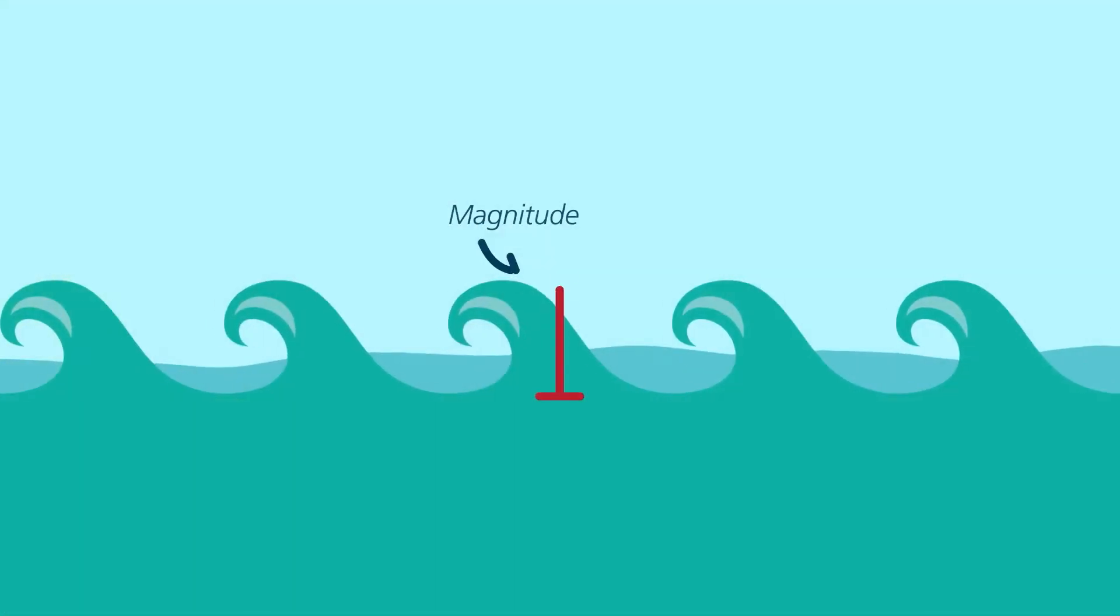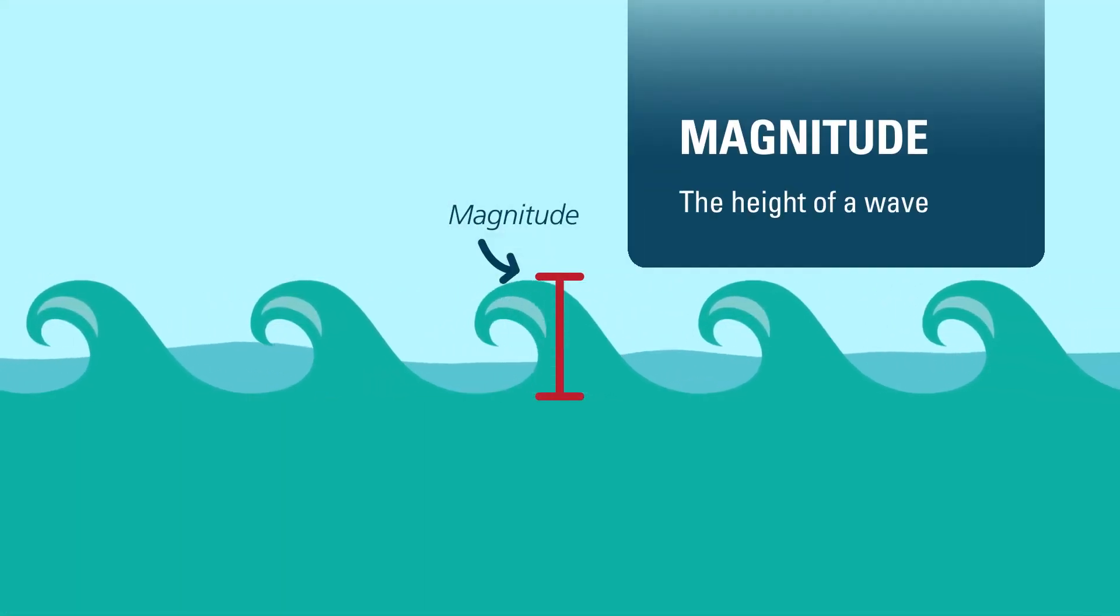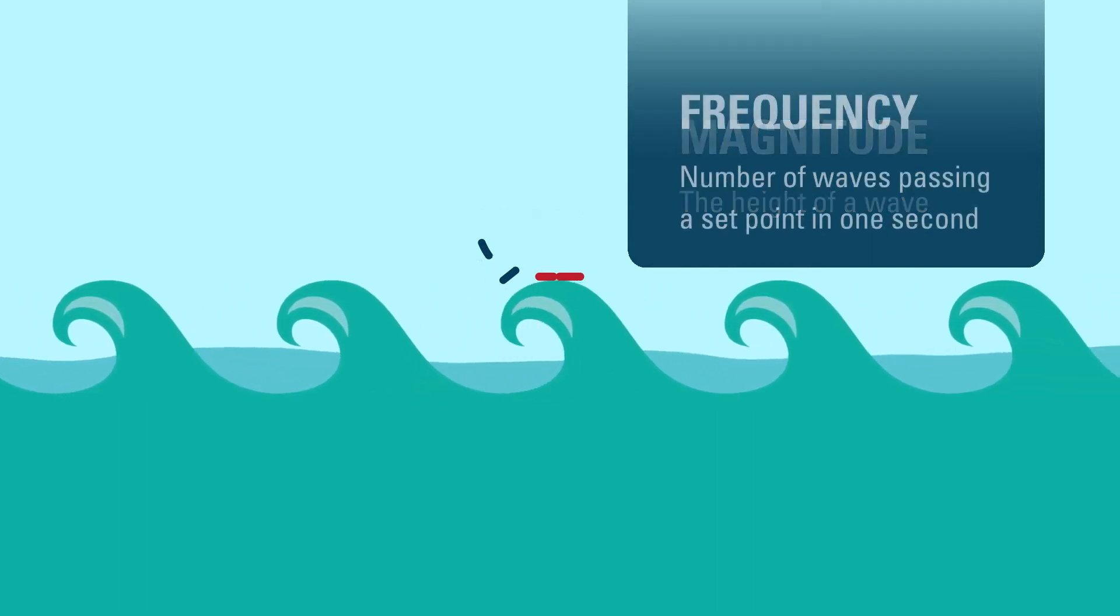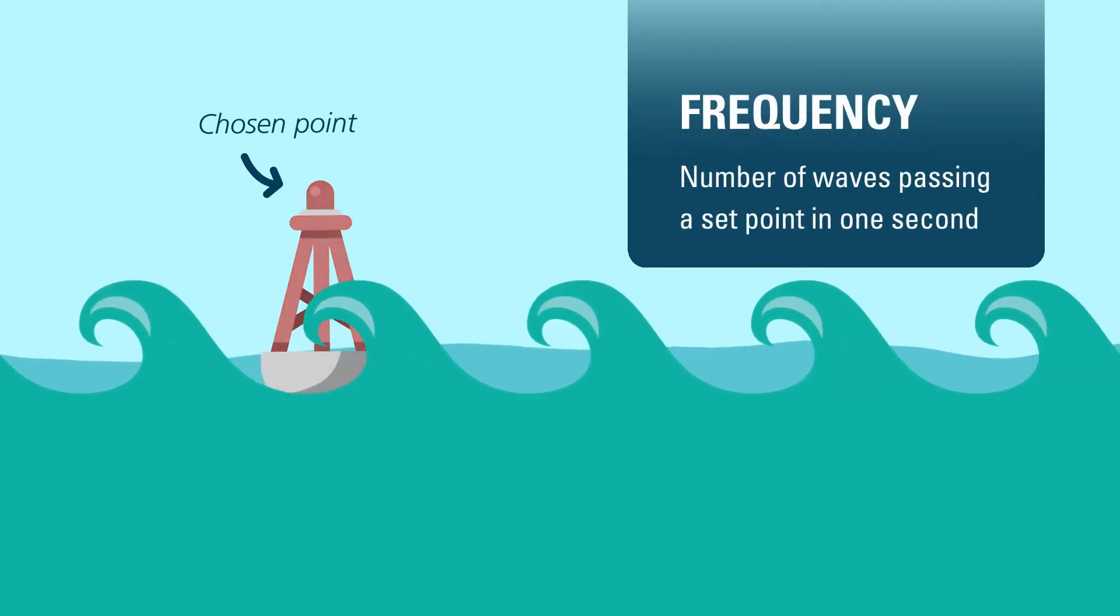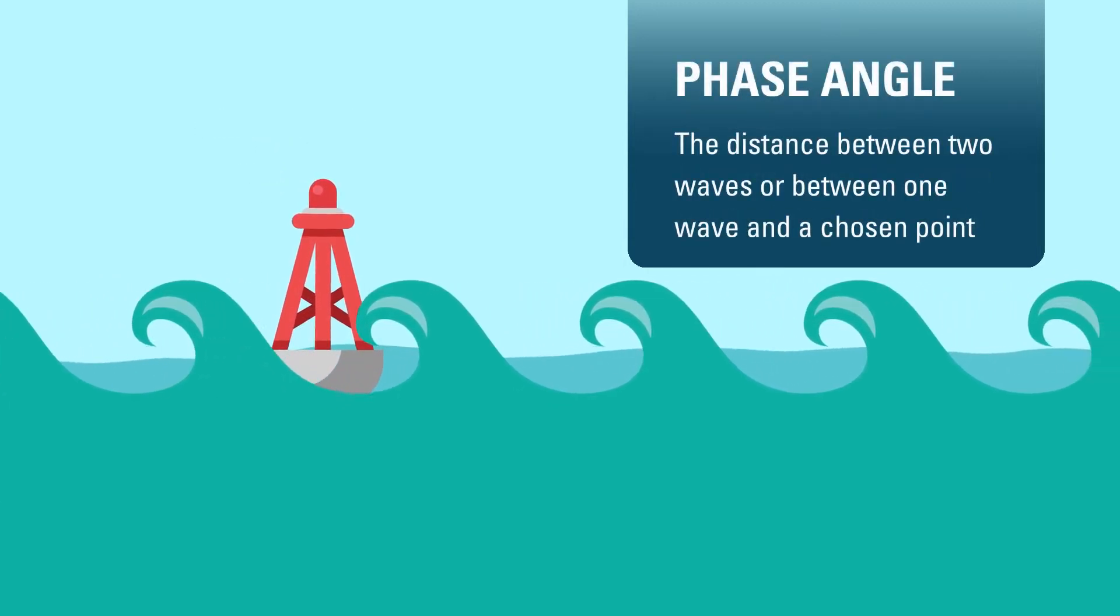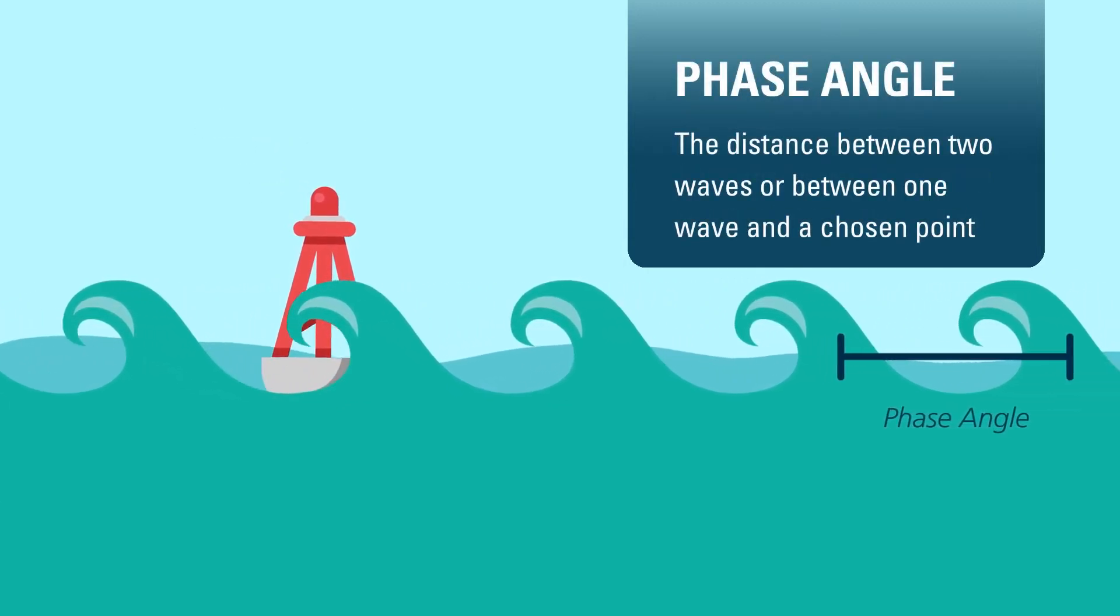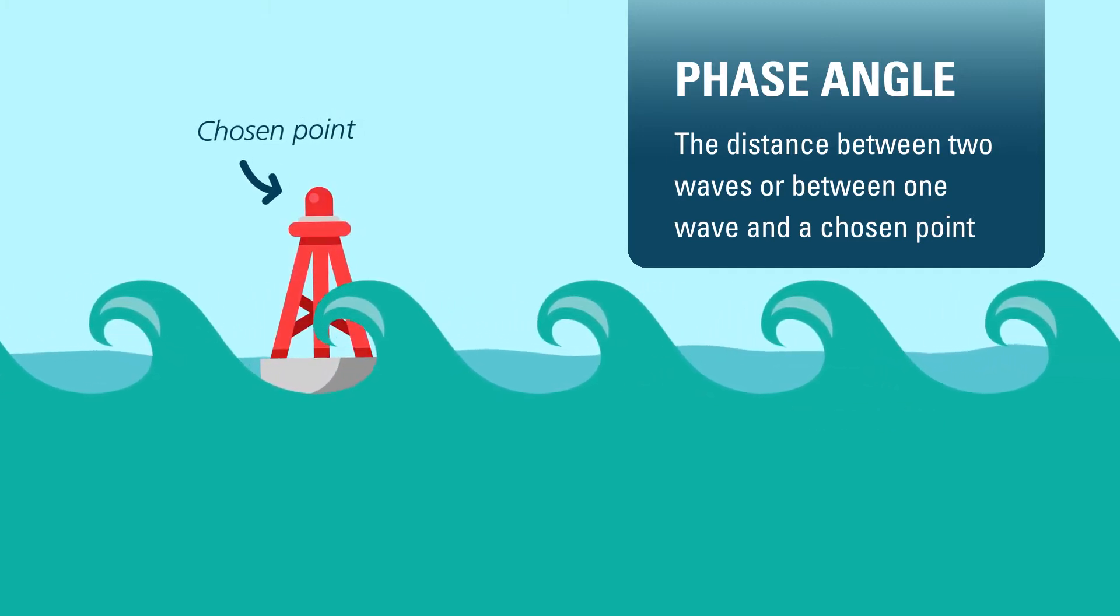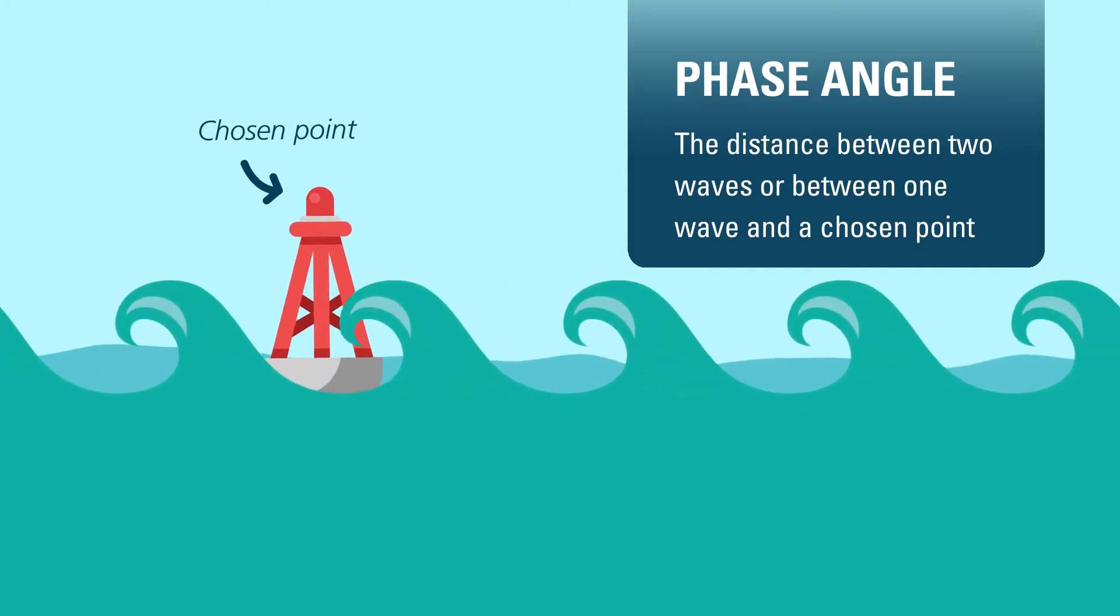To understand these three things, picture ocean waves. The magnitude can be thought of as the height of a wave. The frequency can be thought of as the number of waves passing a point in one second. The phase angle is the relative distance between two waves, or the distance between one wave and a chosen reference point, like a buoy or the shoreline.